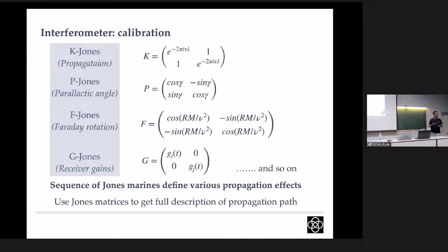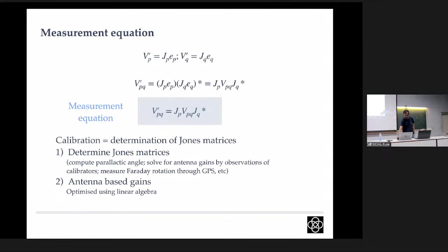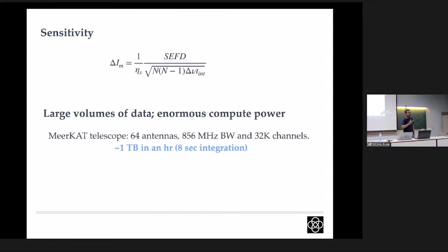For example, with GMRT having 30 antennas, I have 30-choose-2 baseline combinations at any given time. If I observe a known point source of 1 Jansky, I want to measure the gains of each antenna at that instant. I'll have a set of linear homogeneous equations that I can solve simultaneously to find the antenna gains. This calibration solution is obtained and optimized using linear algebra.